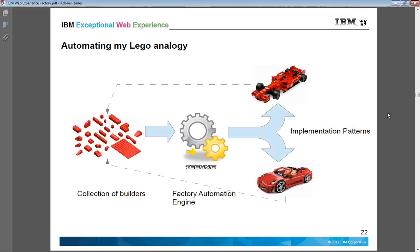This is how the overall process works in web experience factory. First you have a collection of builders. These can be out-of-the-box builders — over 100 builders are provided with web experience factory — or you can write your own builder, which is very simple to do. On this collection of builders you create one model.